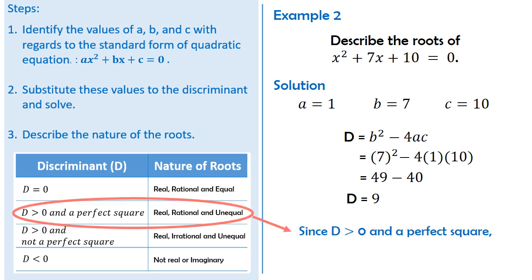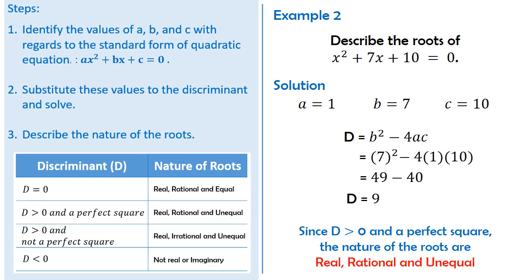Since the discriminant is positive and is also a perfect square, therefore the nature of the two roots are real, rational, and unequal. Again, this can be checked by determining the roots of the given quadratic equation using any of the methods of solving quadratic equations. And that's how you determine the nature of the roots of quadratic equations. I will let you handle the next two examples.